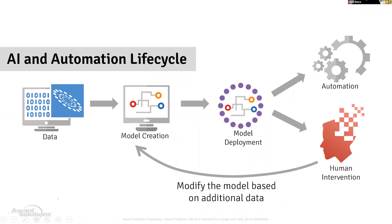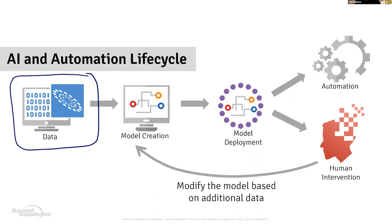So this is the AI and automation lifecycle. The first thing we need is data — representative data of the problem we're trying to solve. If you're trying to detect cancer, you need MRI pictures of people with and without cancer. If you're trying to tell pictures of cats versus dogs, you need pictures of cats and dogs. In the telecom space, this might be network data, cell site data, customer data, or marketing data.